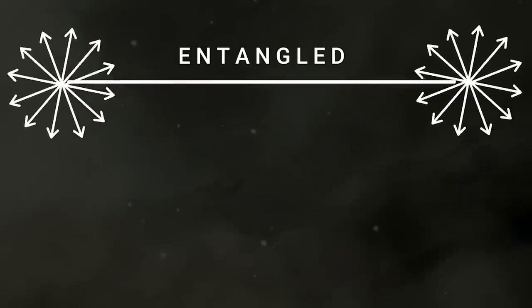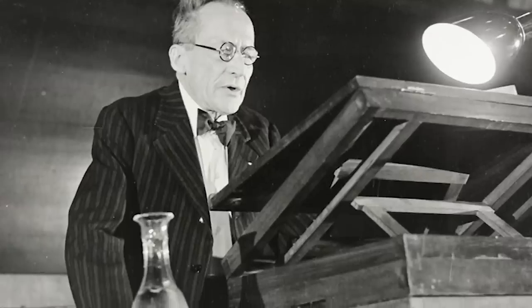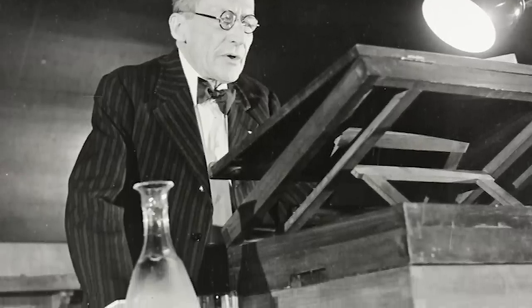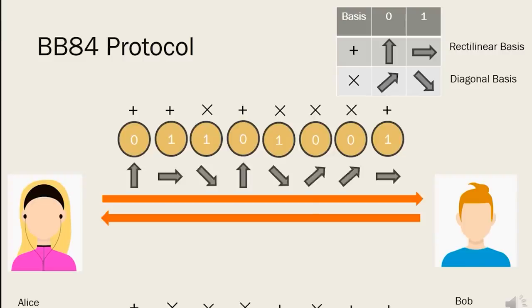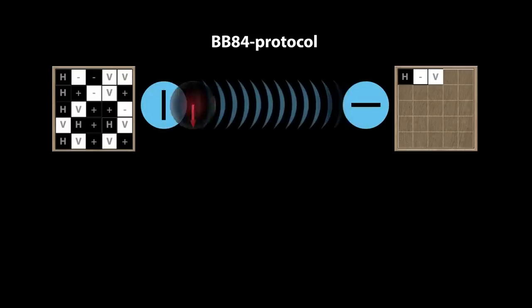The concept of quantum entanglement was first proposed by Austrian physicist Erwin Schrödinger, who won the Nobel Prize in Physics in 1933. In 1984, engineers Charles Bennett and Gels Brasser developed the BB-84 protocol, the first quantum key distribution protocol.